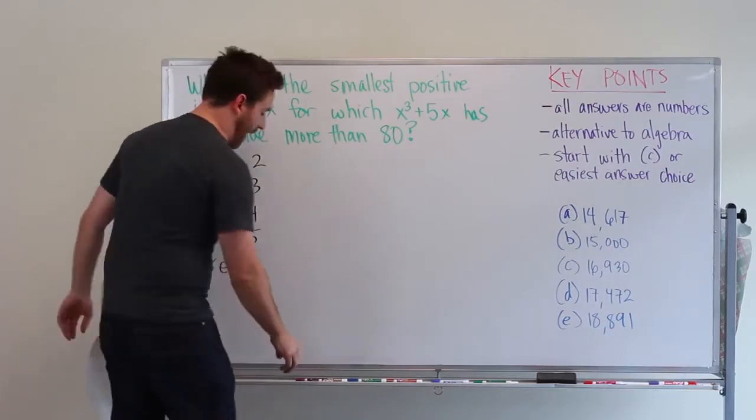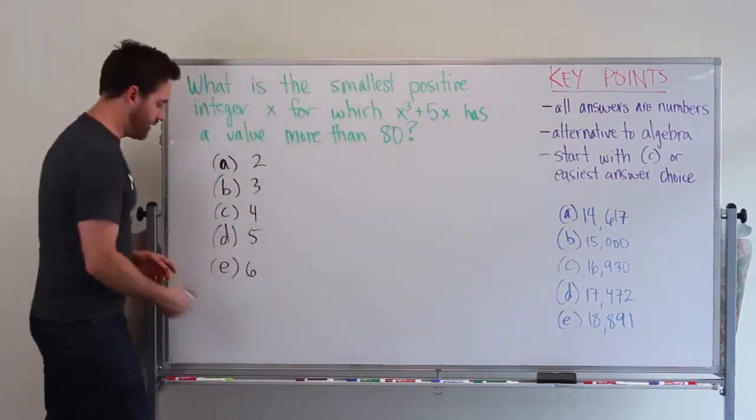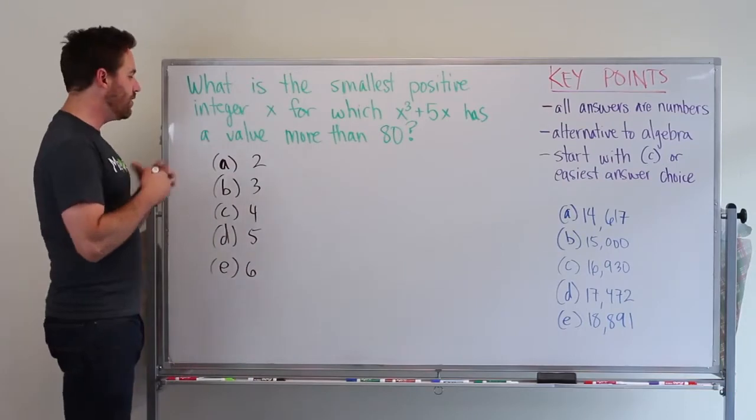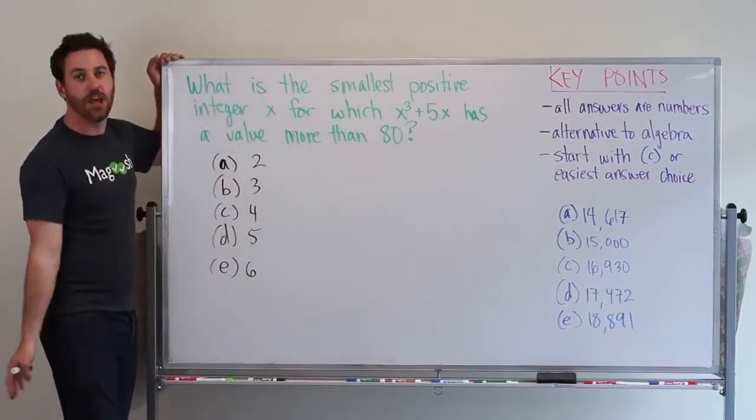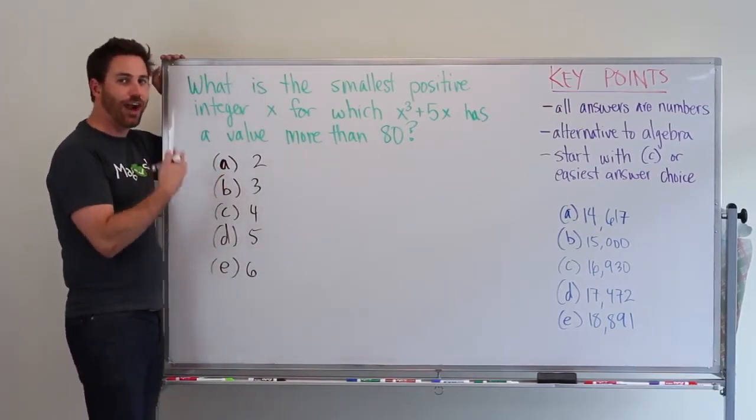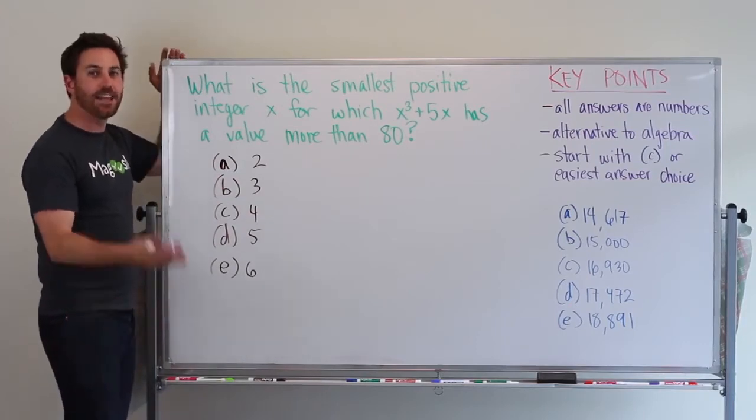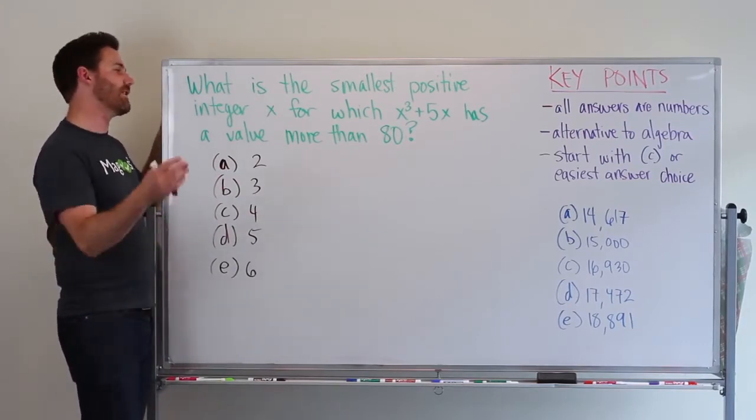So start with C but start with your easiest answer choice ultimately. With back solving you start with your answer choices, plug them into your algebra, and see if it gives you the answer you're looking for. If not, then you move on.